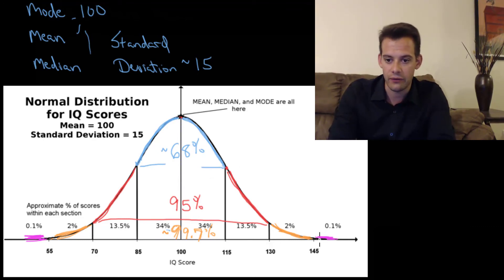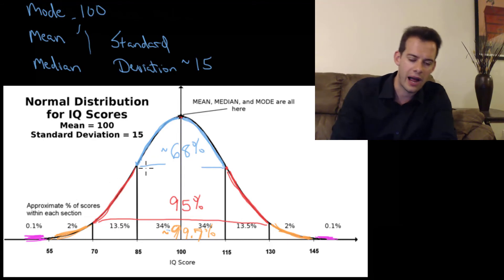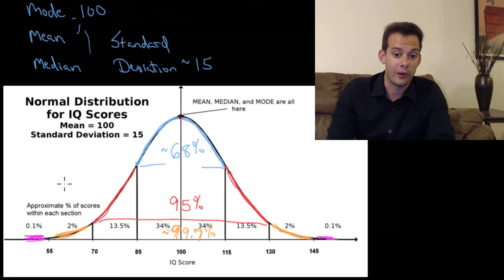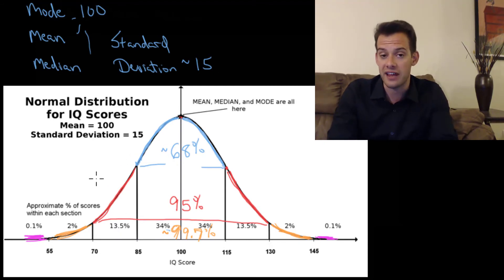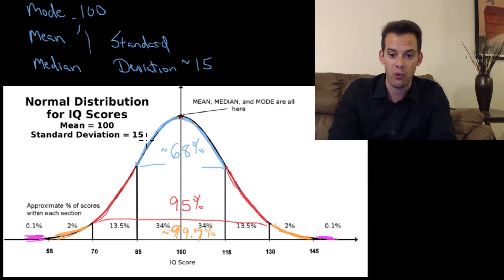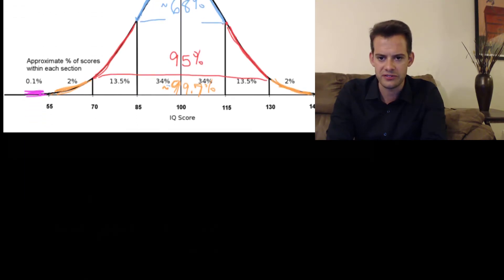At a score of 145 you'd be at about the 99.9th percentile — very high. With a below-average IQ, say 70, you'd be around the 2nd or 3rd percentile. If you've taken the SAT, you've gotten a percentile score telling you where you fall on the distribution. That's the idea of percentile scores.